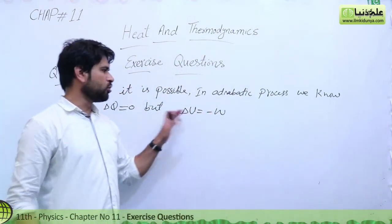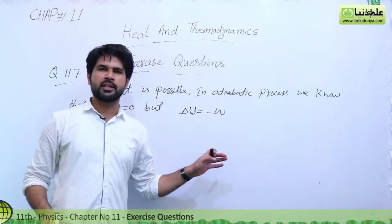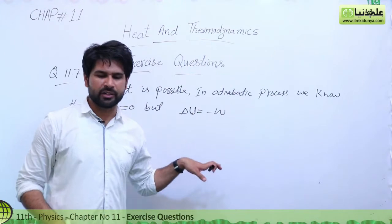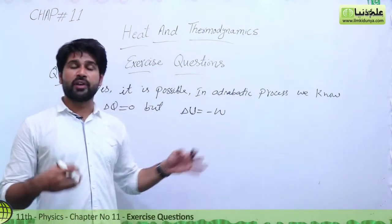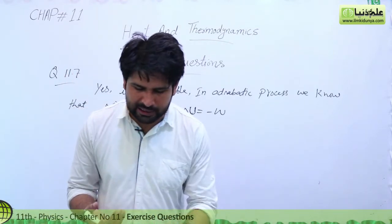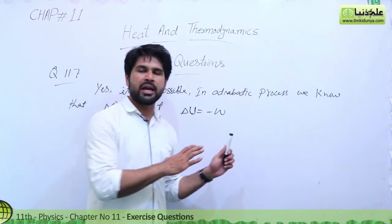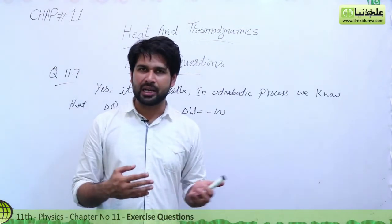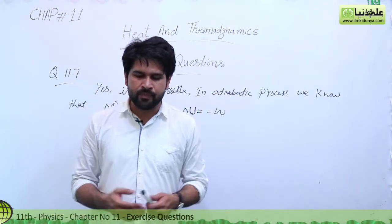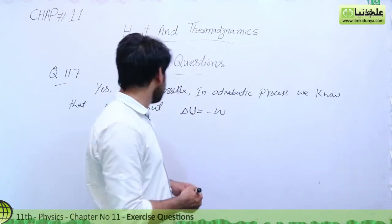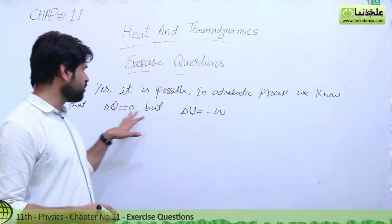In the adiabatic process, delta Q is zero, but delta U equals minus W. This means the internal energy is converted into mechanical form. The negative sign shows that work is done by the system — the system expands, and the gas is allowed to expand.